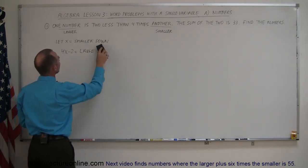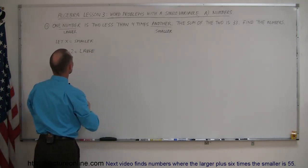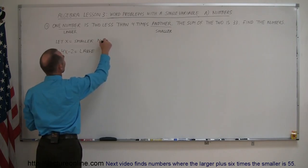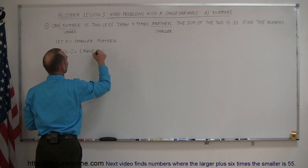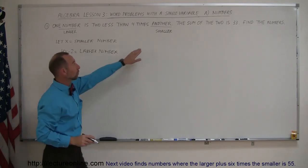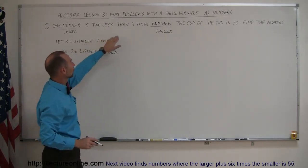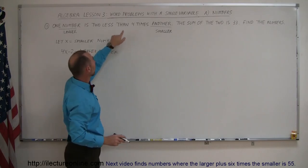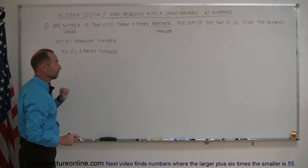Smaller number, that's what I want to write. And here, this is the larger number. Okay, so again, let x be the smaller number, and the larger number is then expressed to be four times the smaller number minus two, right here.